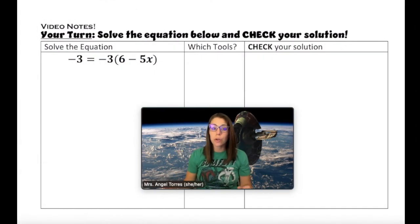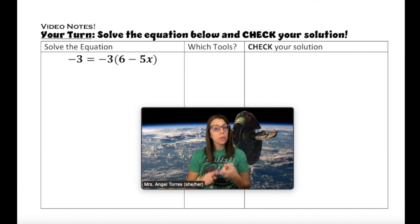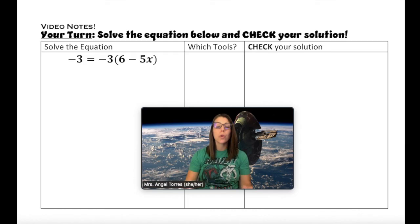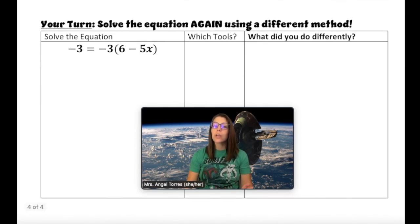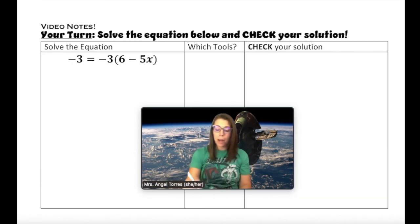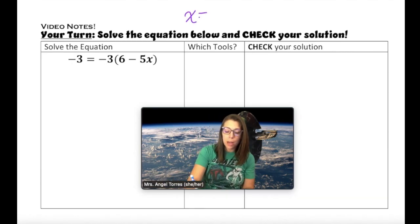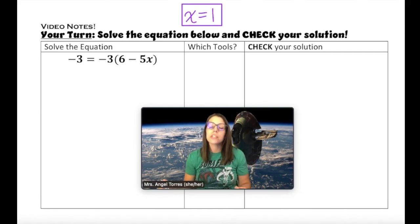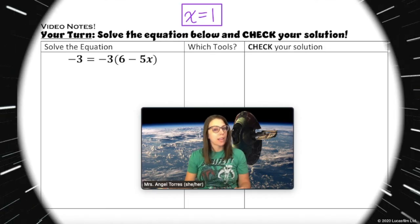On this last page, you're going to solve the equation below and check your solution. You can either use distributive property first, or you can start off with DPOE. Whatever you choose to use, you're going to solve it again using the other method. I will tell you that you should end up with a solution of x equals 1. If you end up with x equals 1, then chances are you did your steps correctly.